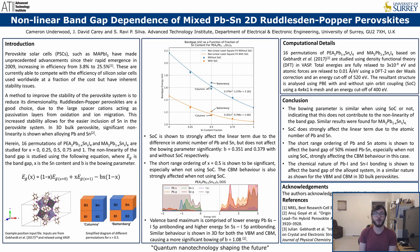As you may know, 3D bulk perovskites have made remarkable progress in the last decade or so, reaching 25.5% power conversion efficiencies as of this year. But one of the major drawbacks of perovskites in their current state is their stability, as well as the use of lead as the B-site metal. Lead can be replaced by tin in the perovskite structure, but this leads to even more issues with stability, such as oxidation from tin 2+ to tin 4+.